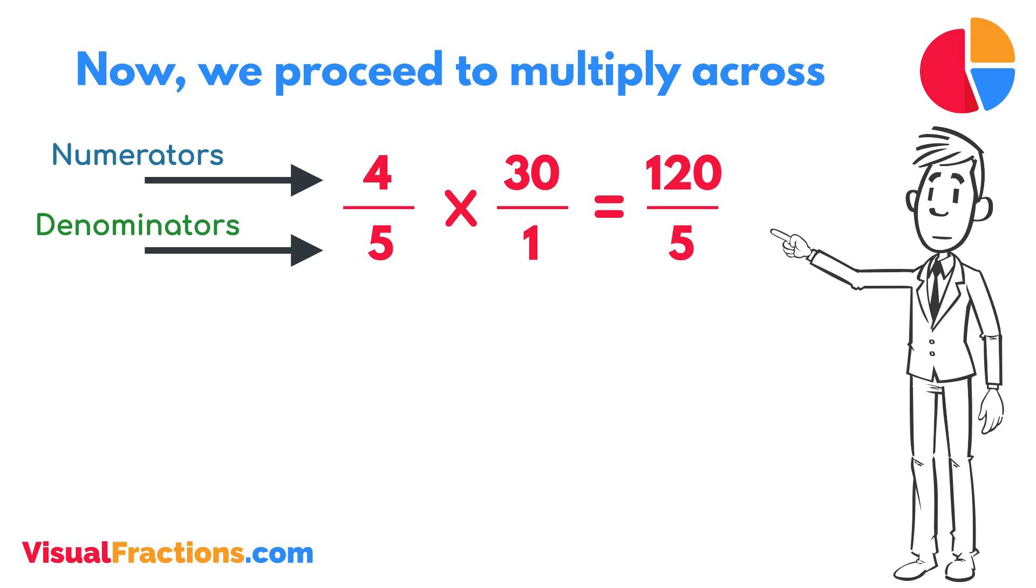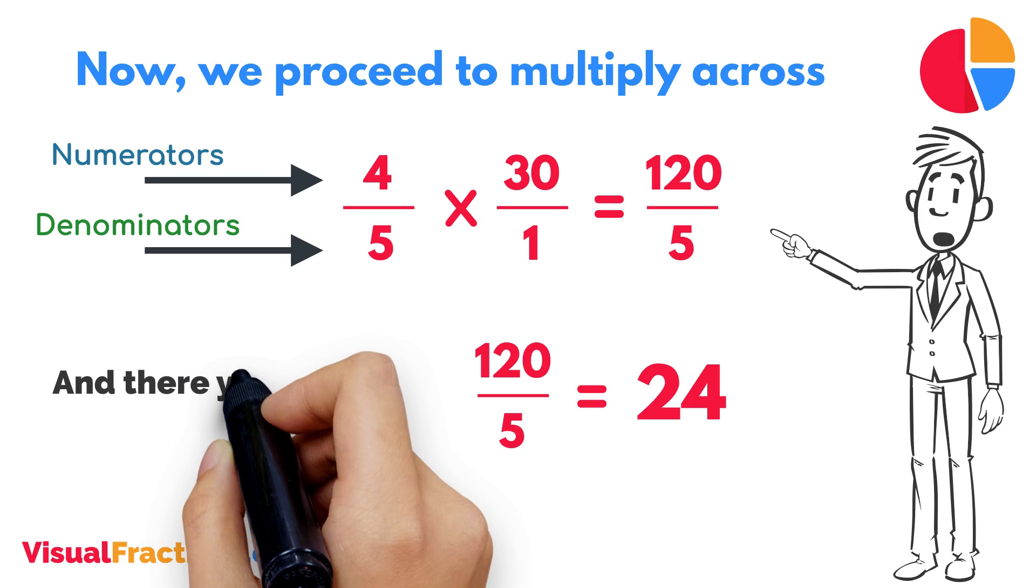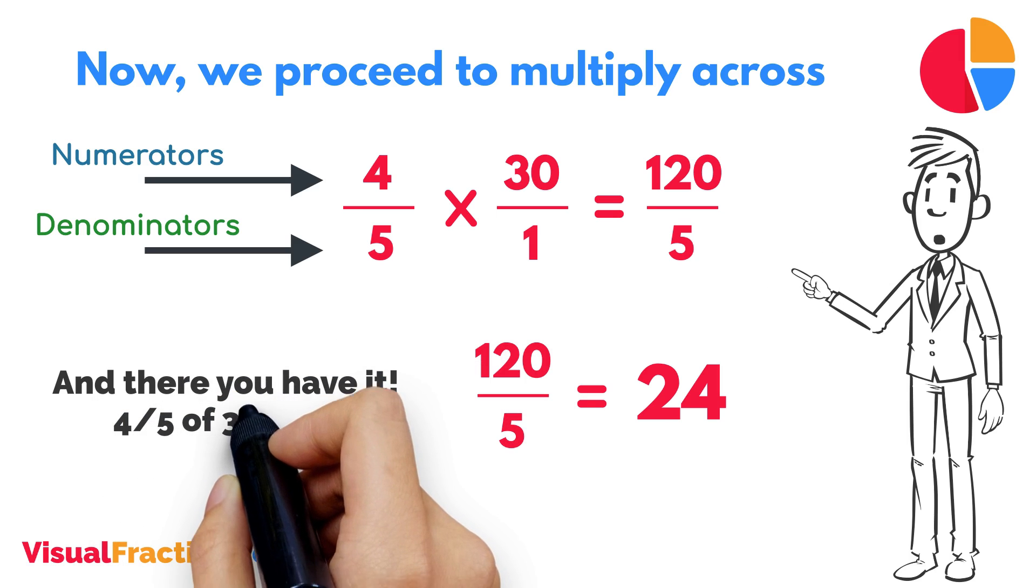To find the final answer, divide the numerator by the denominator. So, 120 divided by 5 equals 24. And there you have it. 4 fifths of 30 is 24.